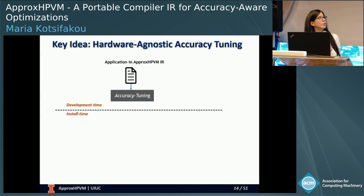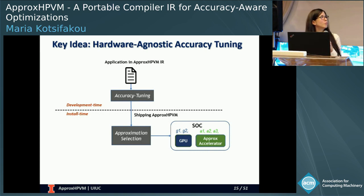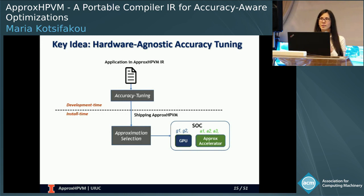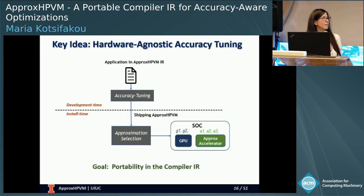Before the IR is shipped at development time, we do an accuracy tuning analysis phase ahead of time, which identifies which operations can be approximated. After the IR is shipped at install time, we have an approximation selection phase that uses the results of the accuracy tuning phase, and maps the approximate operations to the knobs available on the hardware. This way, the IR remains portable and all hardware-specific choices happen at install time.